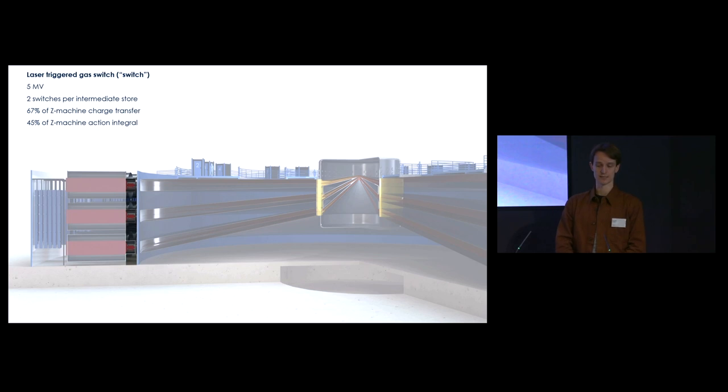The next element is a laser-triggered gas switch, about this long - a big cascade of electrodes. The switch is triggered to break down and conduct by a laser creating a channel of ionized plasma. We're thinking about the same design as the Z machine, though ideally we'd like to not use SF6 inside the switch. The intermediate store is charged to 5 megavolts and the switch triggers at 5 megavolts, lower than the Z machine.